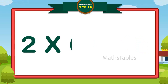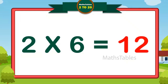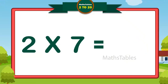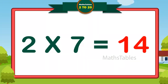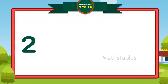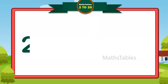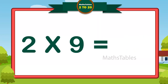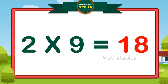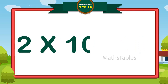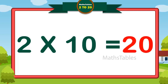Two sixes are twelve. Two sevens are fourteen. Two eights are sixteen. Two nines are eighteen. Two tens are twenty.